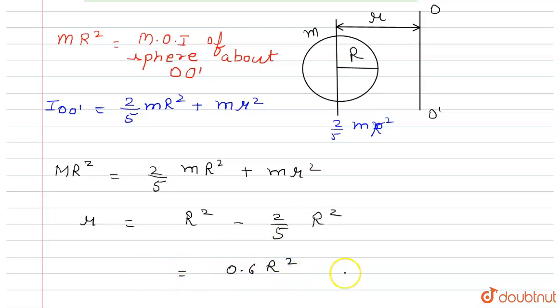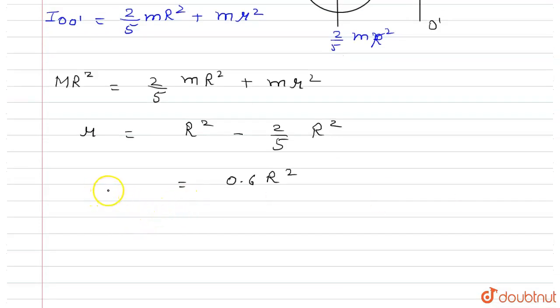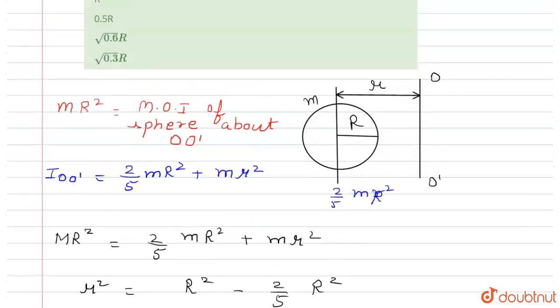From here we can easily find the value of r. Here is R square and from here we can easily find the value of r that is root 0.6 r. So the answer is root 0.6 r. Now check the option, option D is correct.